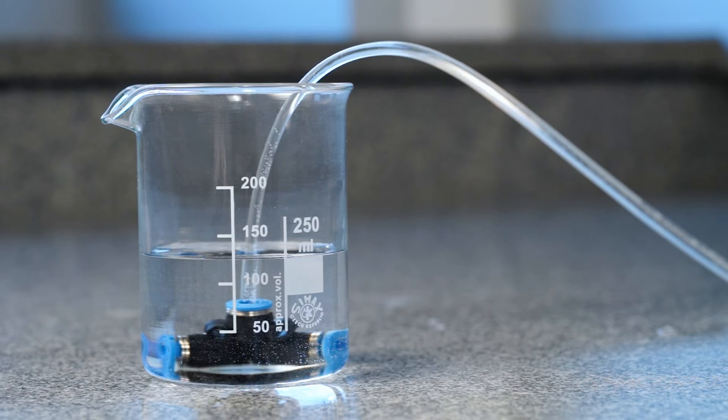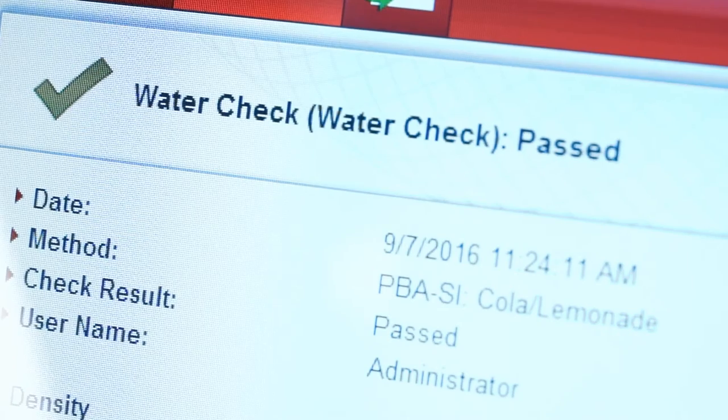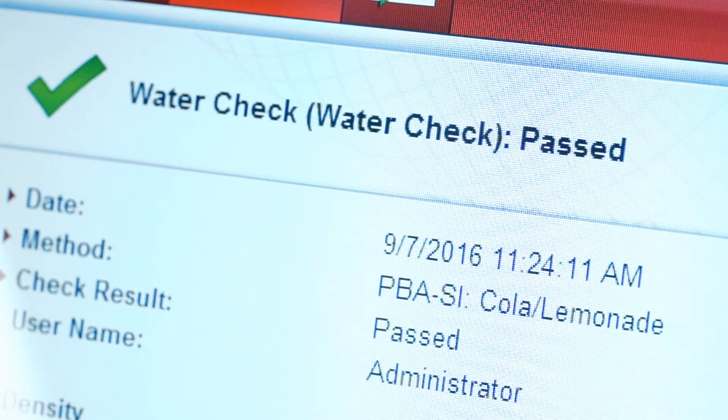For each additional measuring module, about 20 milliliters extra need to be added. The instrument will automatically present a report at the end of the water check. Even if the water check has failed, the instrument will tell you.